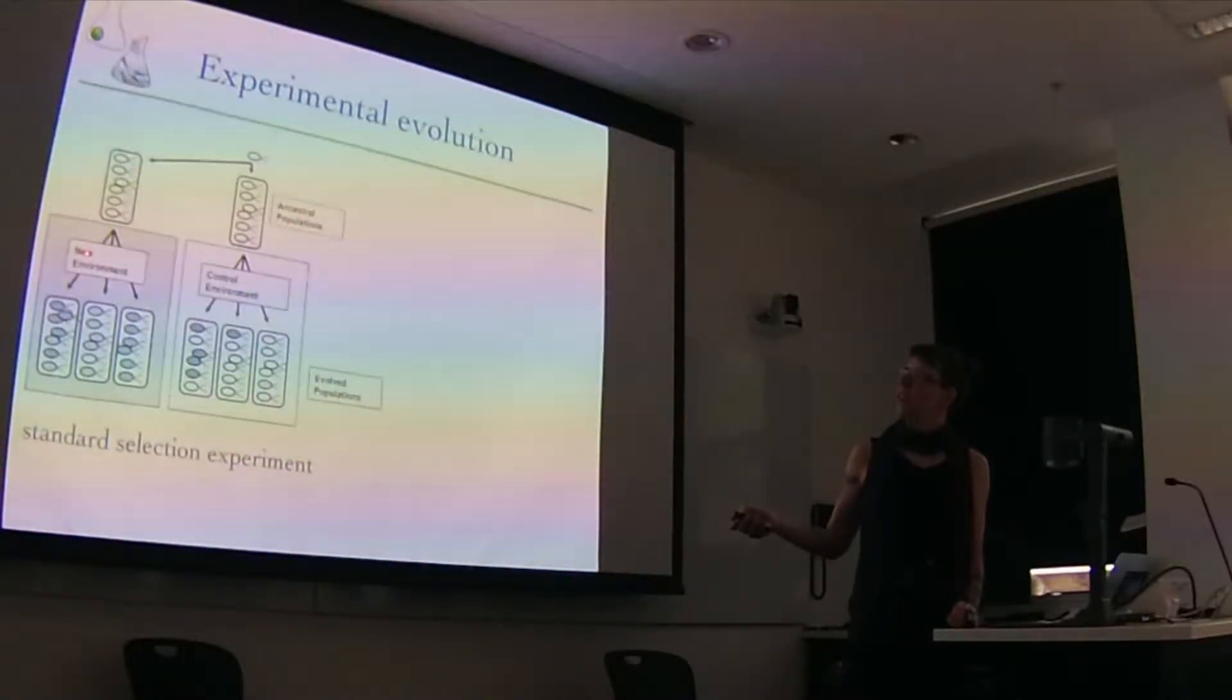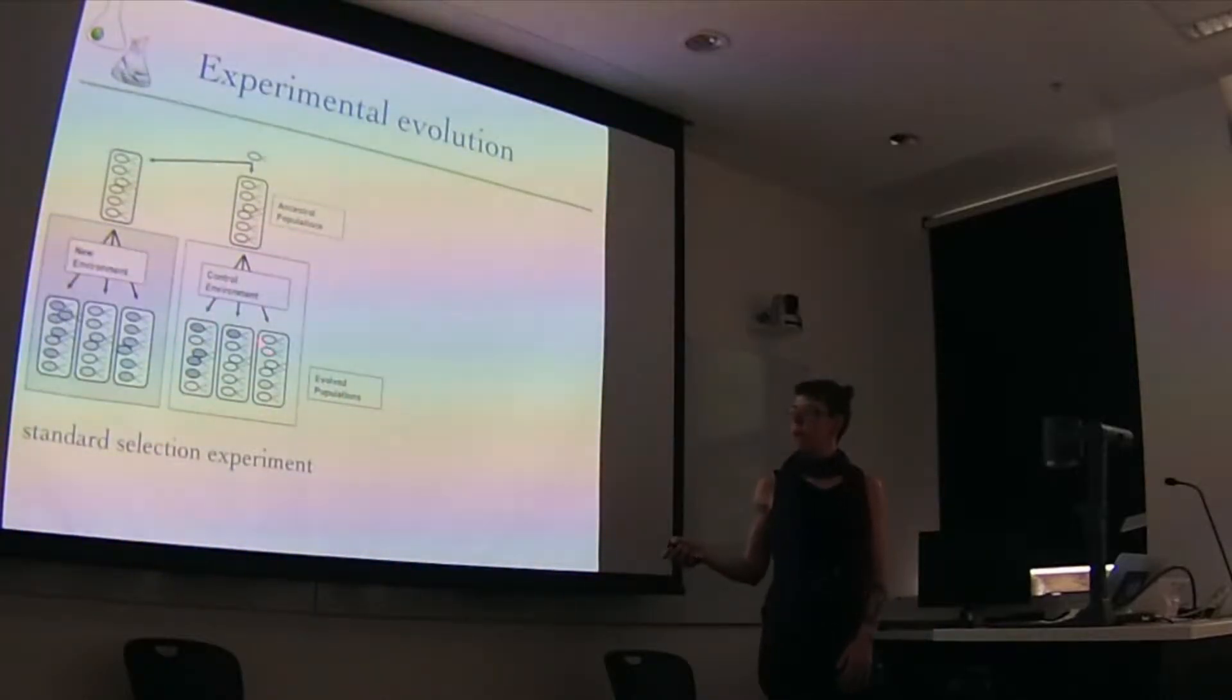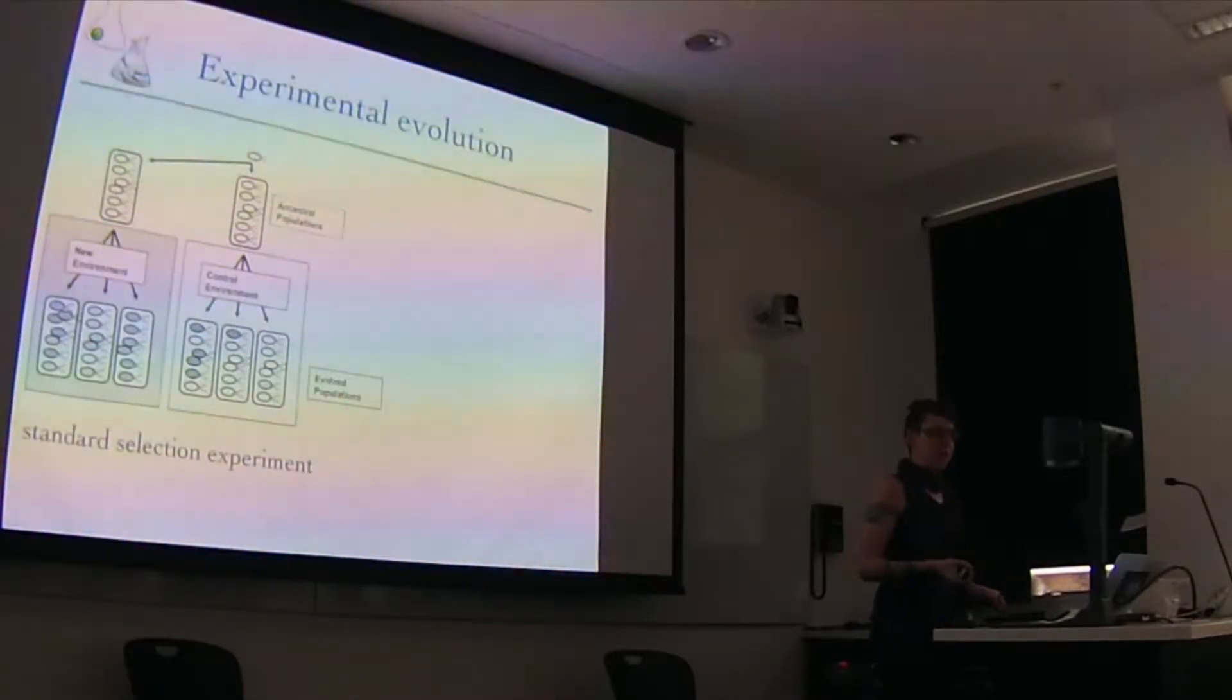That's just bookkeeping. But you start off with ancestral populations, and the only important thing is that they be the same, and if they have some sort of genetic variants that you know what it is. Then you take replicate populations and you put them in a new environment and a control environment, and you let them evolve for dozens or hundreds or thousands of generations depending on what question you're asking. And at the end you have these evolved populations.